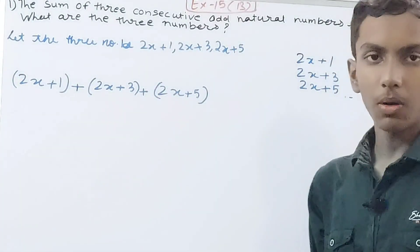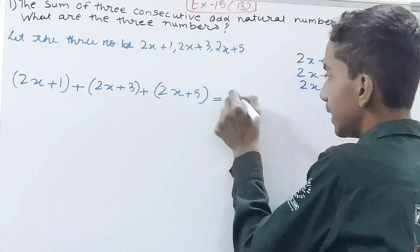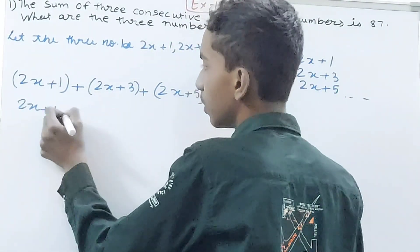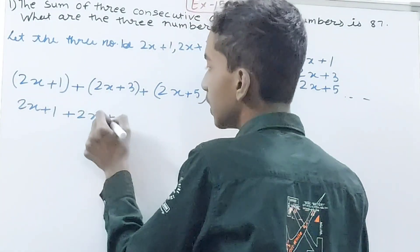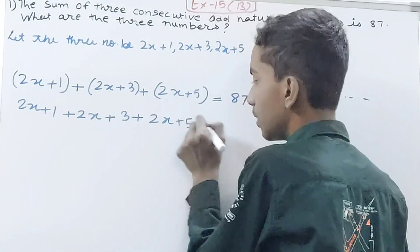Now open the brackets. You're going to have 2x+1 + 2x+3 + 2x+5 = 87.